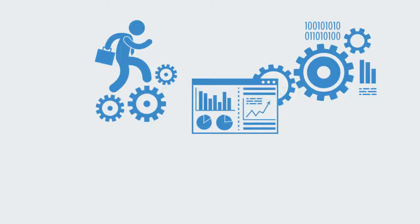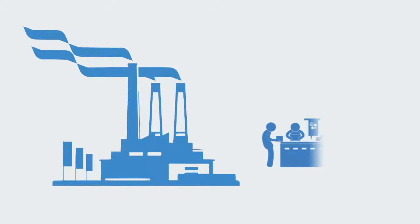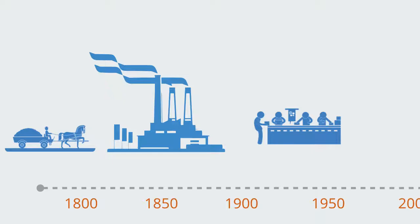We can, and often do, go on using our traditional industrial age management approach to try and manage these organizations. But the basic principles underlying our traditional management approach were designed for dealing with relatively simple systems — organizations that have a limited number of components that interact in a simple linear fashion at a low level of interconnectivity and where we can constrain those components. A factory would be a classical example of this.